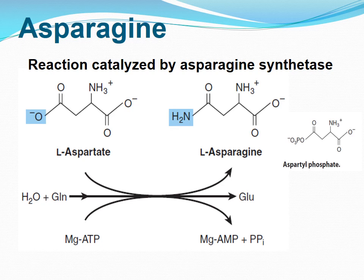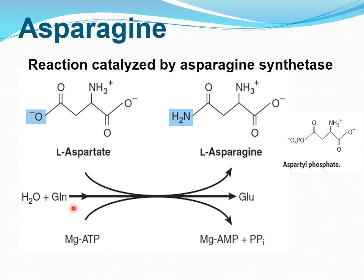In the biosynthesis of asparagine, the conversion of aspartate to asparagine is catalyzed by asparagine synthetase. This reaction is ATP-dependent. Glutamine, rather than ammonium ion, provides the nitrogen. An important point to remember: in glutamine biosynthesis, ammonium ion provides the nitrogen, but in asparagine biosynthesis, glutamine provides the nitrogen. Bacterial asparagine synthetases can also use ammonium ion.